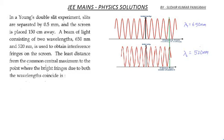This is a problem from NCERT book. It says, in a Young's double slit experiment, slits are separated by 0.5 millimeters and the screen is placed 150 centimeters away.